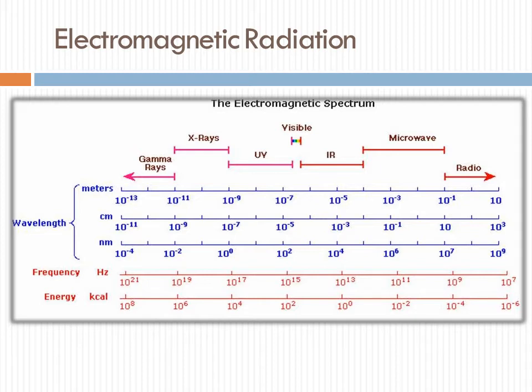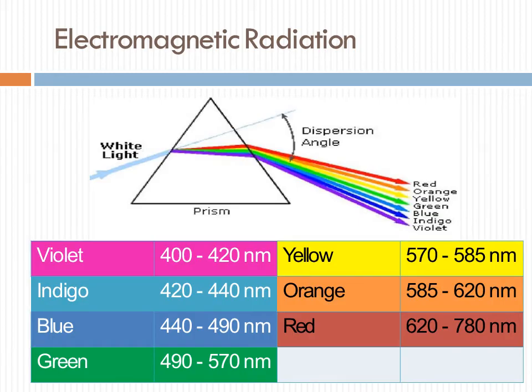From gamma rays to radio rays, the table shows the wavelength, frequency and energy. The white light shows dispersion — VIBGYOR: violet 400–420 nm, indigo 420–440, blue 440–490, green 490–570, yellow 572–580, orange 585–620 nm, and red 620–780 nm. This is called the visible spectrum.